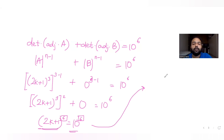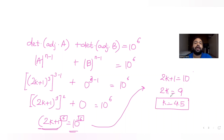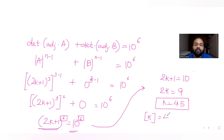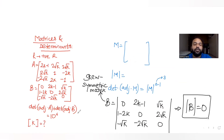Since the powers are the same, we equate the bases: 2k+1 = 10. Solving, 2k = 9, so k = 4.5. We need the greatest integer function of k, i.e., the largest integer less than or equal to 4.5, which is 4. So floor(k) = 4.